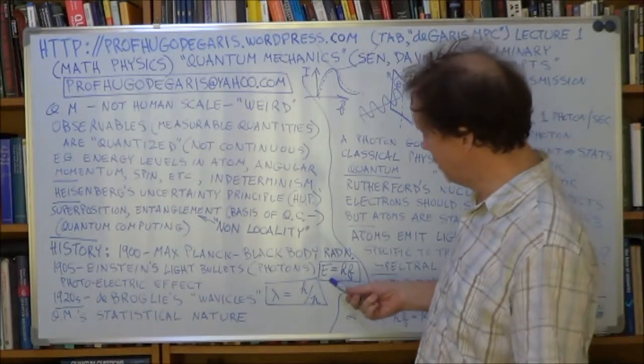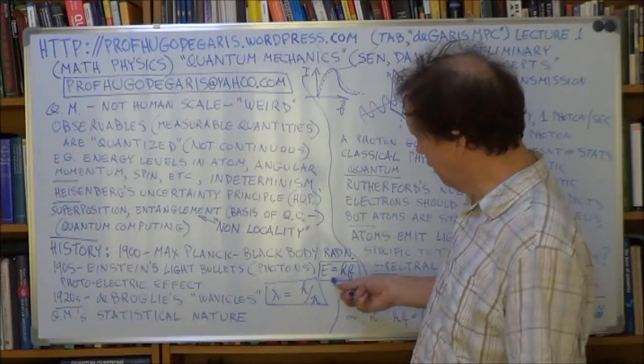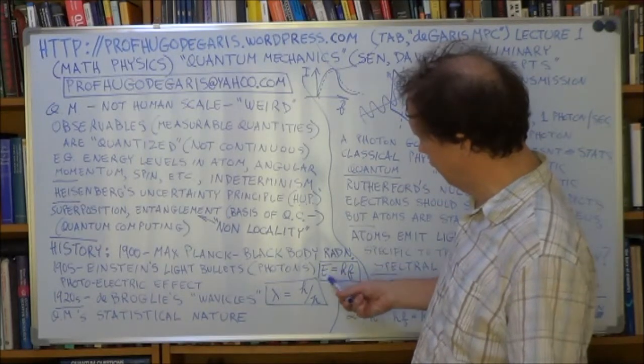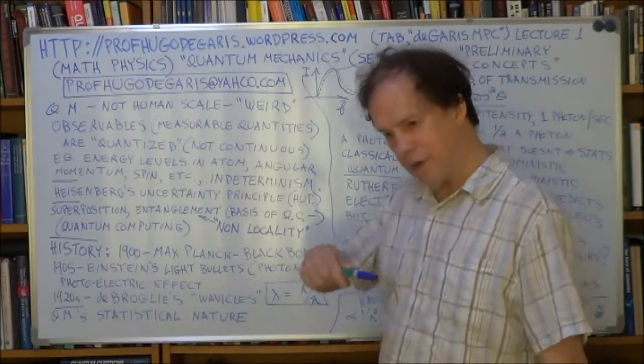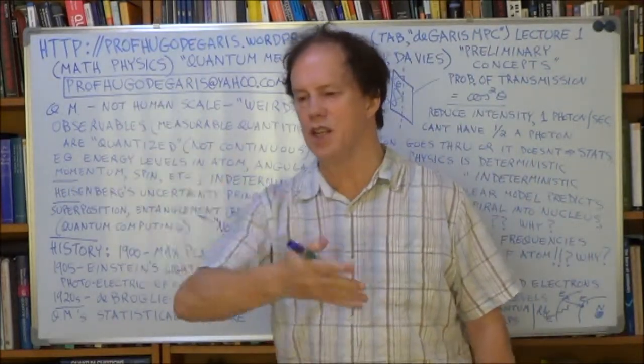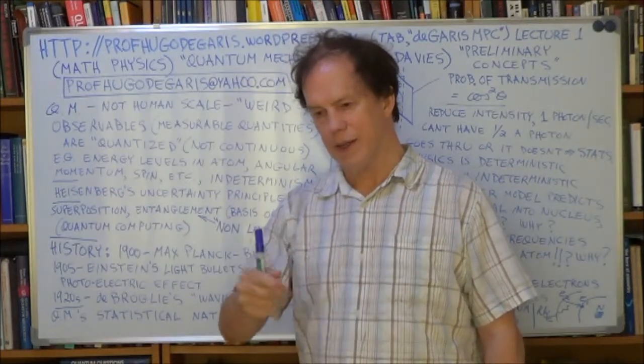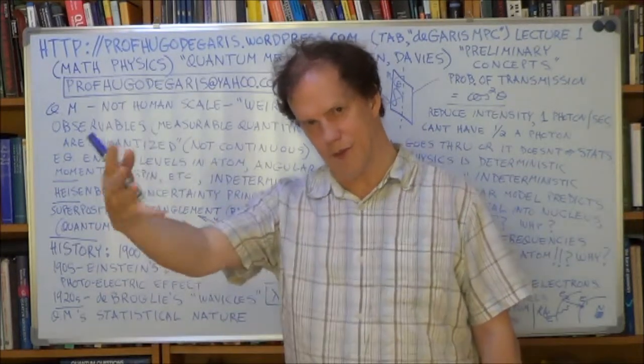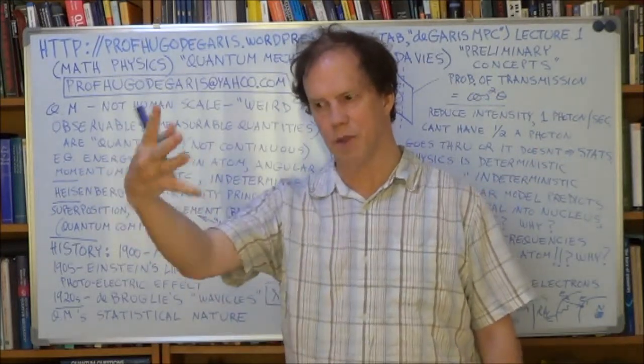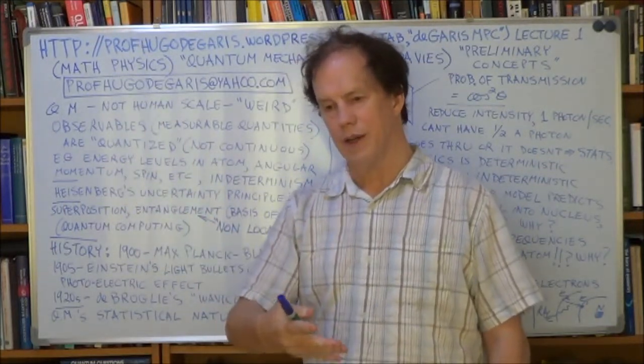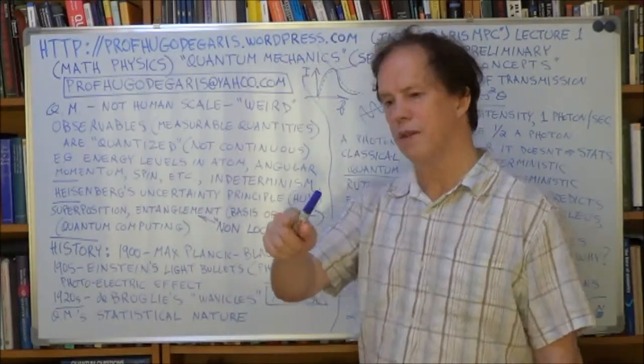So, Einstein's idea is that he took Planck's formula. Planck was saying that the quantum of energy exchanged between the light and the matter was proportional to the frequency of the light, and that little quantum of energy that got exchanged between the light and the matter, e for energy, was proportional to the frequency.